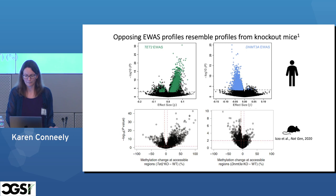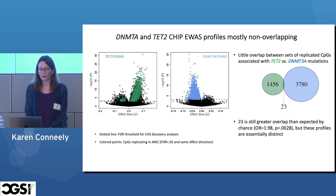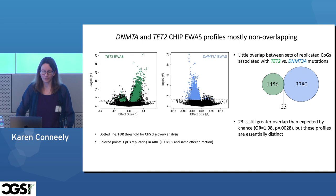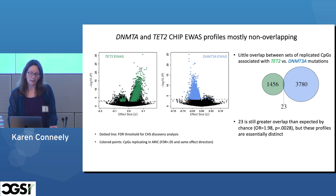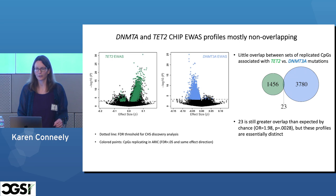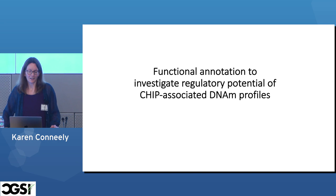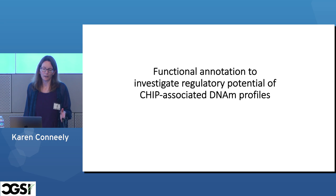We'd like to investigate these profiles further. One question: are the CpG sites going up with TET2 mutations the same as those going down with DNMT3A mutations? It turns out they're really not — looking at the sets of replicated CpG sites, only 23 out of thousands overlap. Although 23 is greater than what we'd expect by chance, it's still not very much. These profiles are essentially distinct, and we're going to treat them as distinct profiles in our next step, which is functional annotation to try to better understand their regulatory potential.